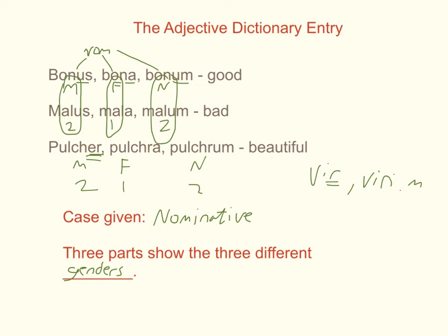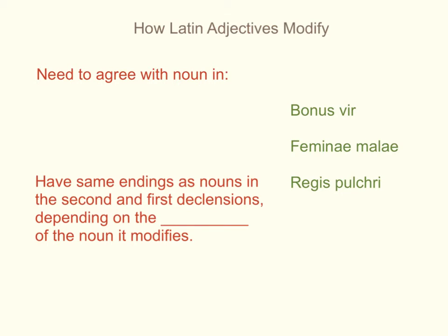We're actually going to match our adjective to its noun in three different things: case, number, and gender. The dictionary tells you the adjectival form of each gender in the nominative case, and it's up to you to create or recognize the adjective form that agrees with the noun. Your main responsibility is going to be recognizing when an adjective agrees with something. They need to agree with a noun in case, number, and gender — if it doesn't agree in any one of those things, it does not agree with its noun.